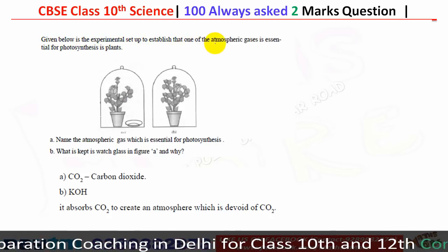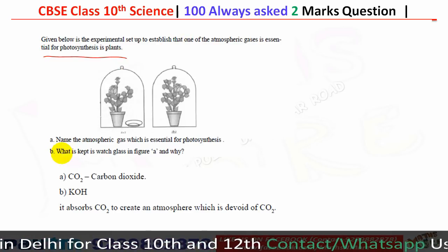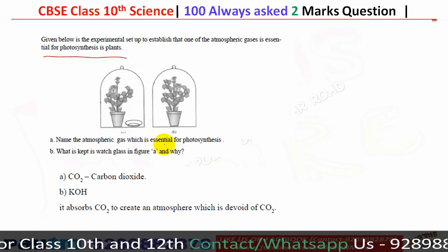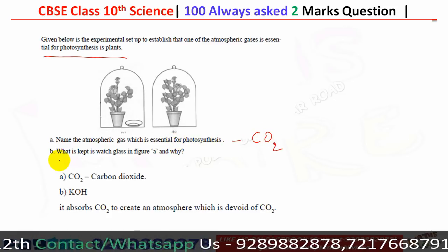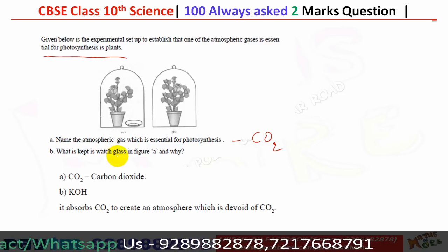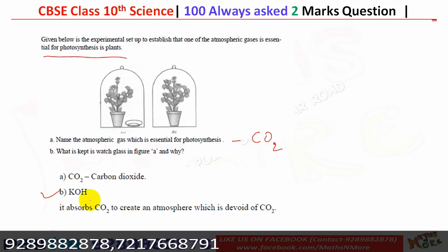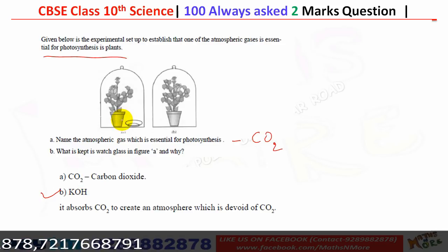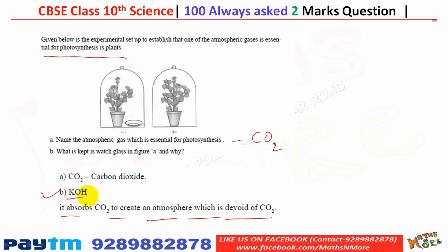The experimental setup demonstrates that one atmospheric gas is essential for photosynthesis in plants. That gas is CO2. In figure A, KOH — potassium hydroxide — is kept in the watch glass because it absorbs CO2, creating an atmosphere devoid of CO2, thus removing all carbon dioxide from the setup.